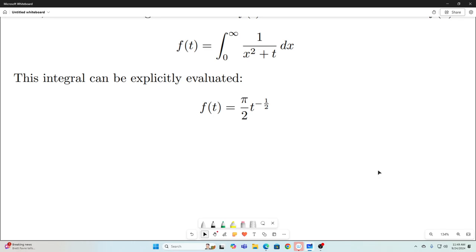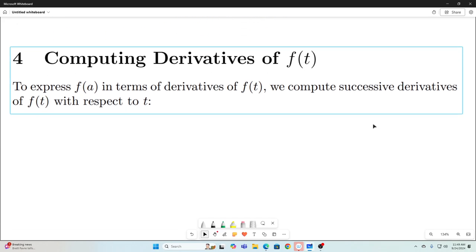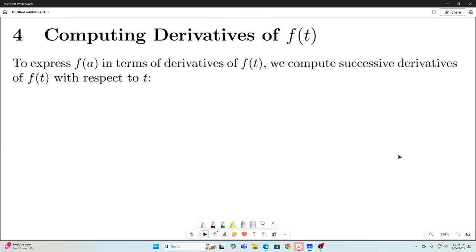And if we differentiate them, they will be equivalent. If we differentiate them twice, their second derivatives will be equivalent. Their third derivatives will be equivalent. So we get the following. We're just going to express f of a in terms of f of t. We're going to compute successive derivatives of f of t with respect to t.